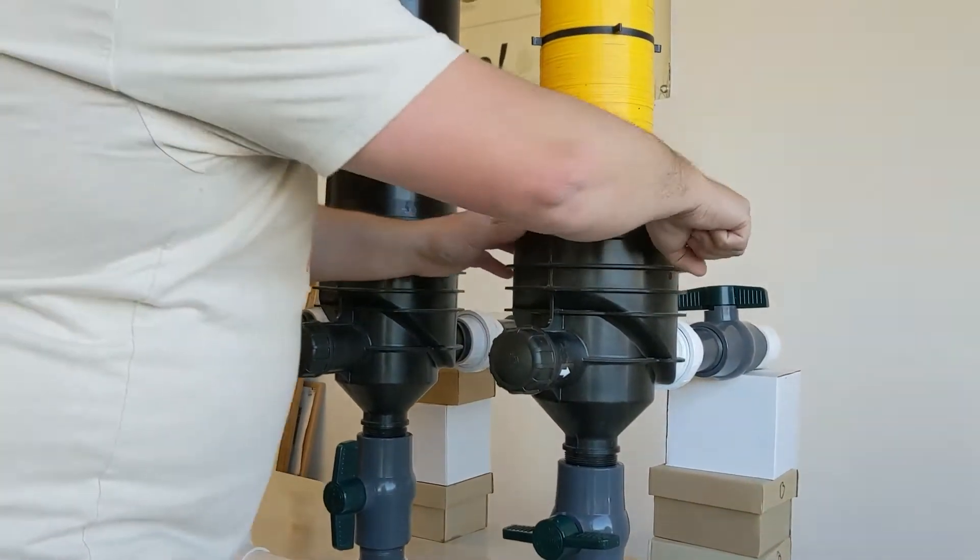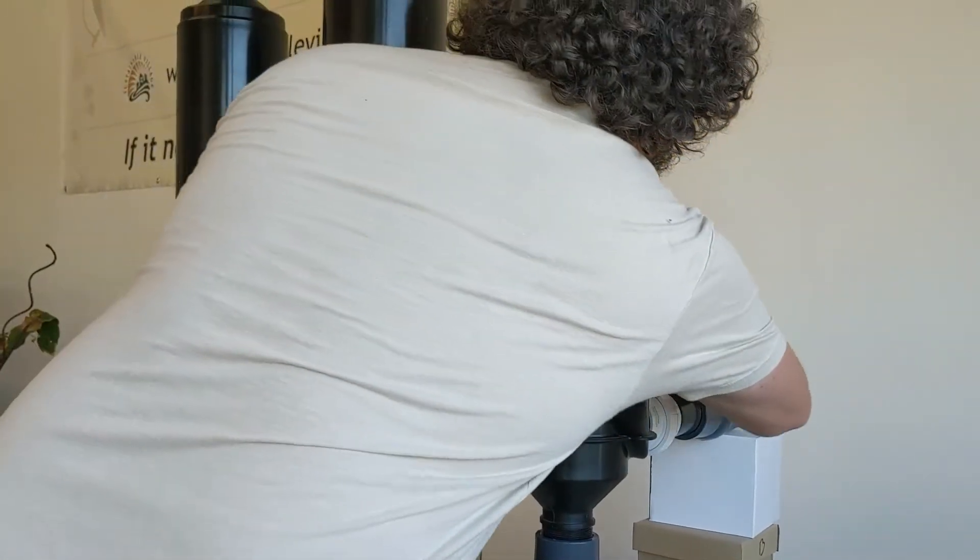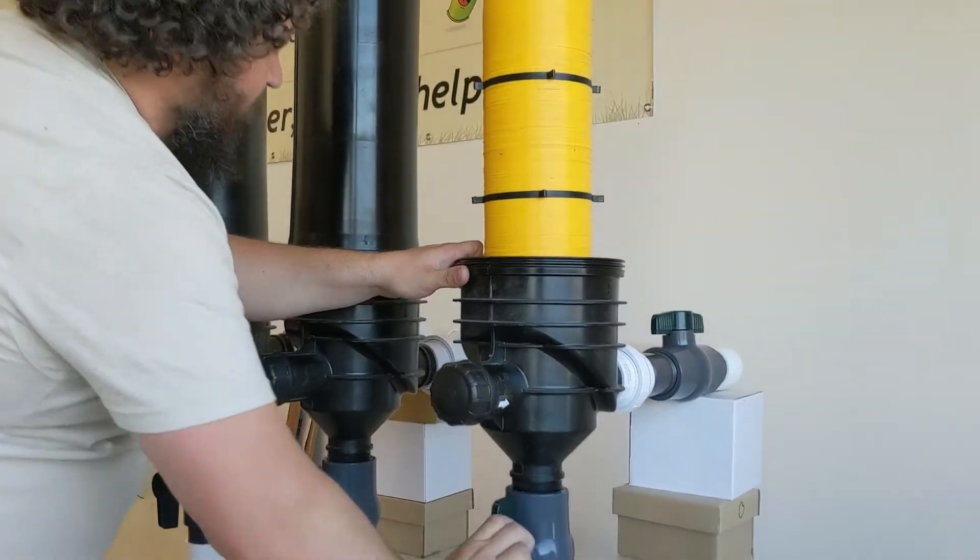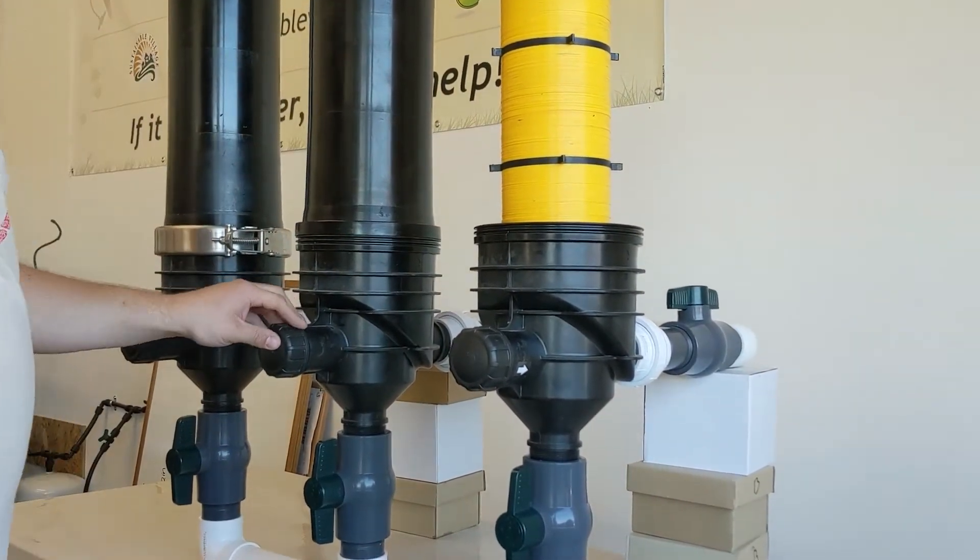And then when we're done, we can put the cap back on, tighten the ring lock again, open it up, put it back into service, and then move down the line and clean each one in series like that.